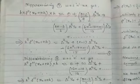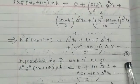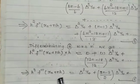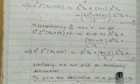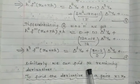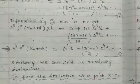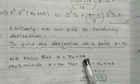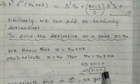To find f‴(x₀ + nh), differentiate equation 4 with respect to n. After simplification: h³·f‴(x₀ + nh) = Δ³y₀ + (2n−3)/2 · Δ⁴y₀. Similarly, we can find the remaining higher derivatives such as f⁽⁴⁾(x₀ + nh), f⁽⁵⁾(x₀ + nh), etc.